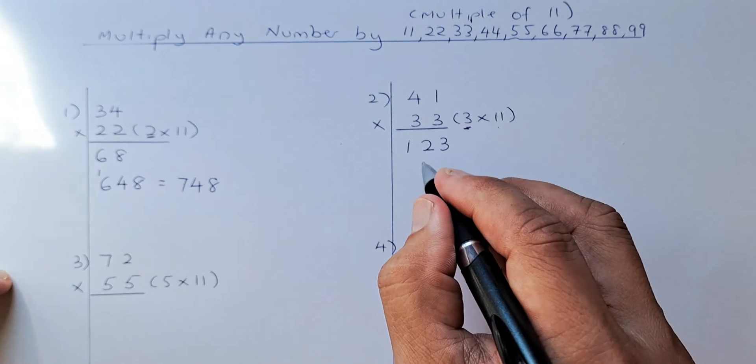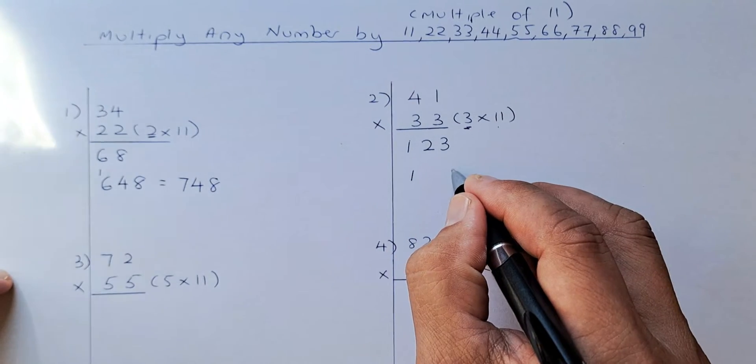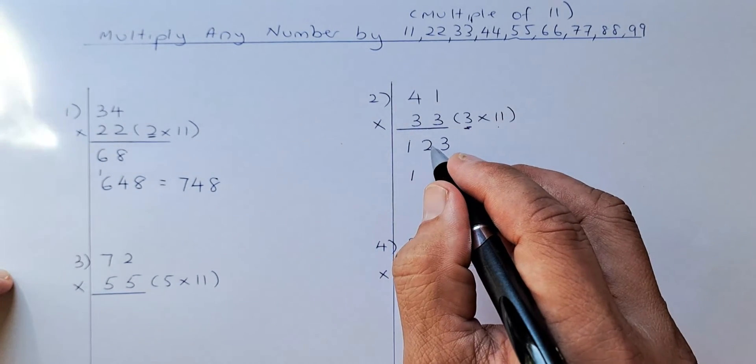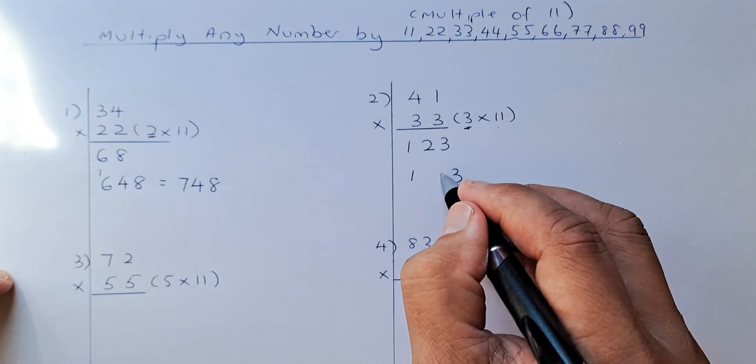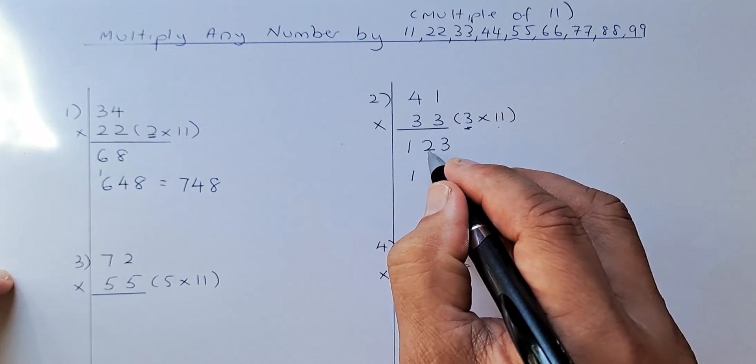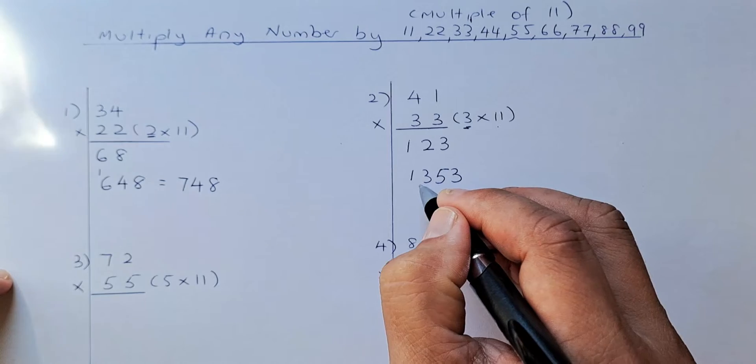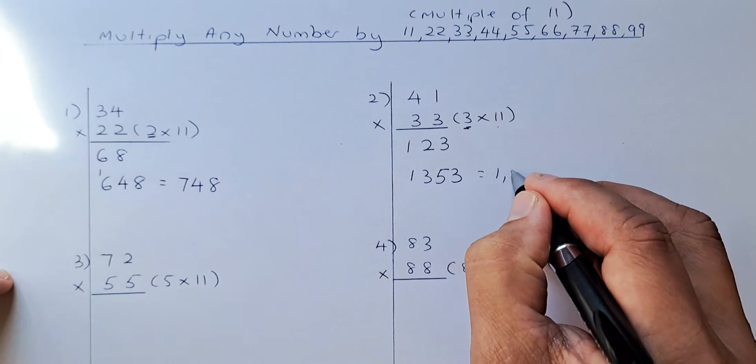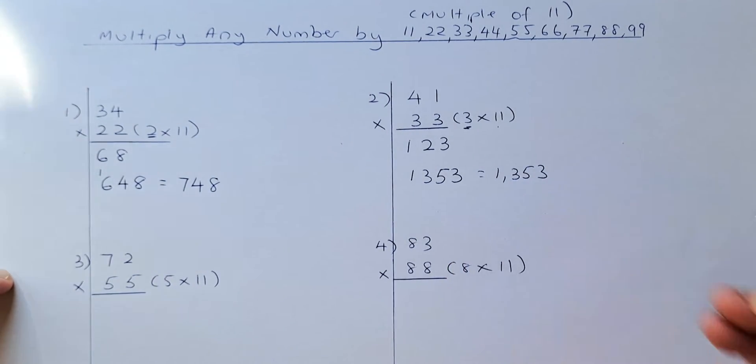And then you're going to multiply 123 by 11. So to do that, it's the same. So 1 and 3 remain. And then you're going to add the numbers in between. So 2 plus 3 is going to be 5. And then 1 plus 2 is going to be 3. So the answer is going to be 1,353 when you multiply 41 by 33. Hope you are following me.